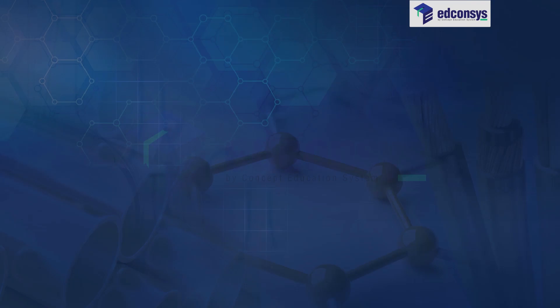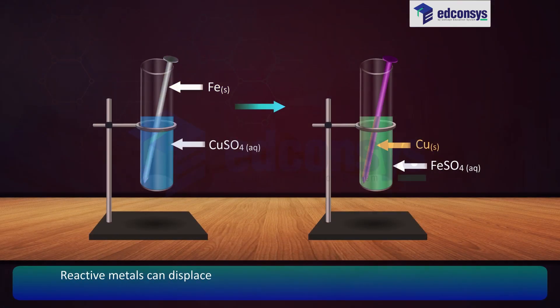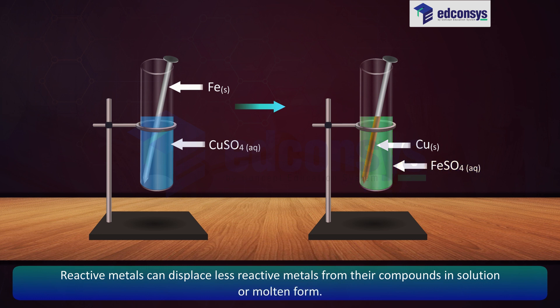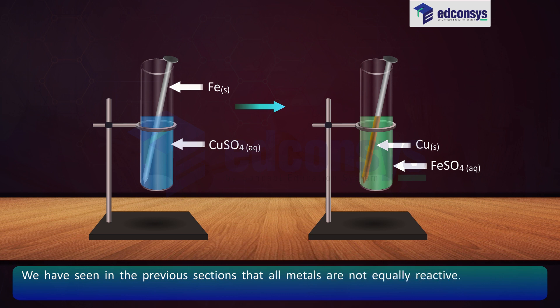We have seen in the previous sections that all metals are not equally reactive. Displacement reactions give better evidence about the reactivity of metals. It is simple and easy: if metal A displaces metal B from its solution, it is more reactive than B.